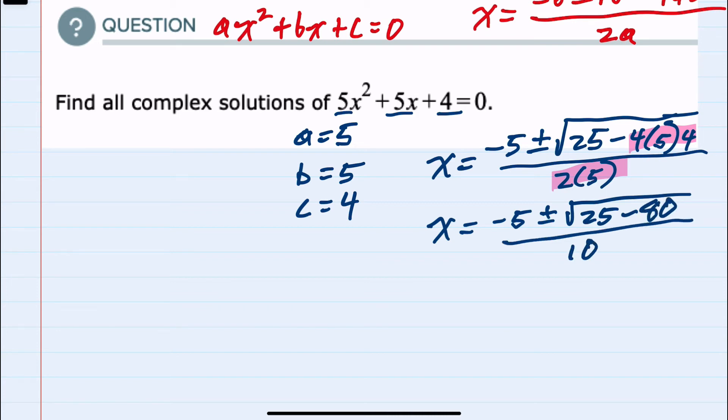Continuing to simplify underneath the radical, we can do the subtraction, and we have negative 5 plus or minus 25 minus 80 is a negative 55 over 10.